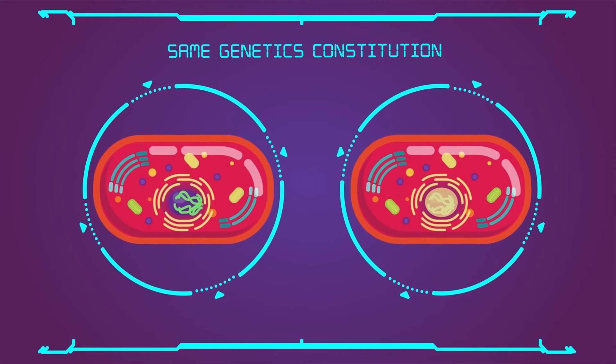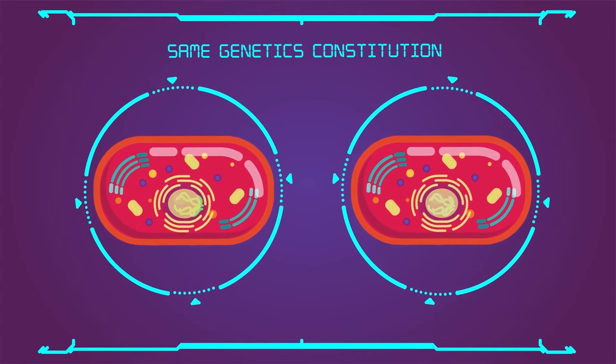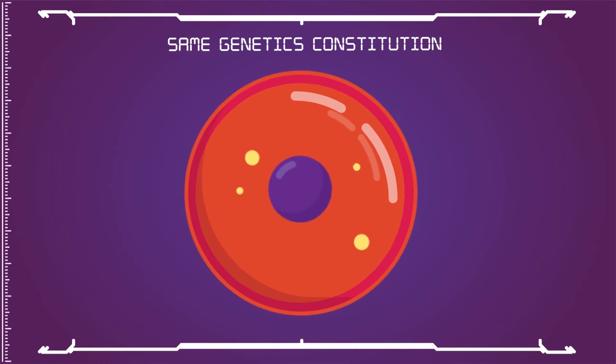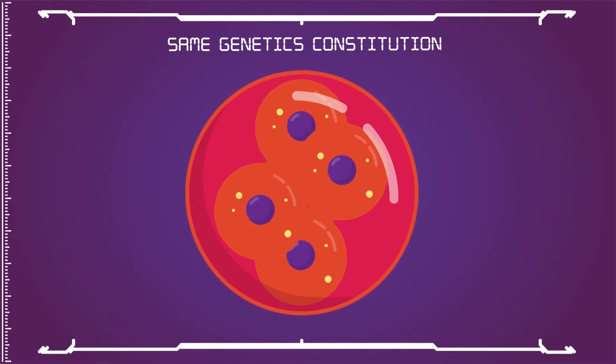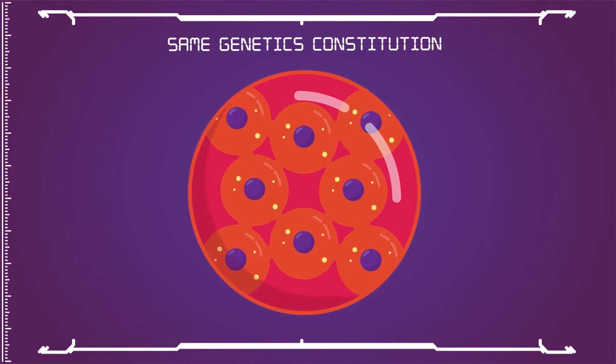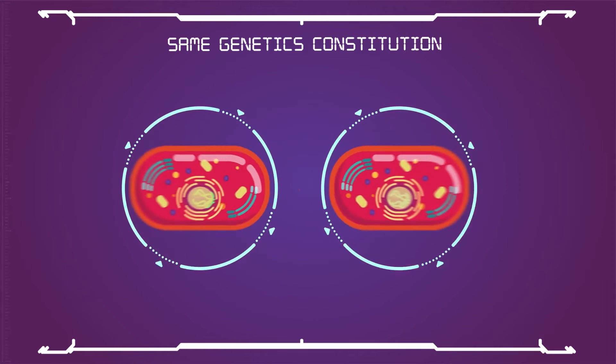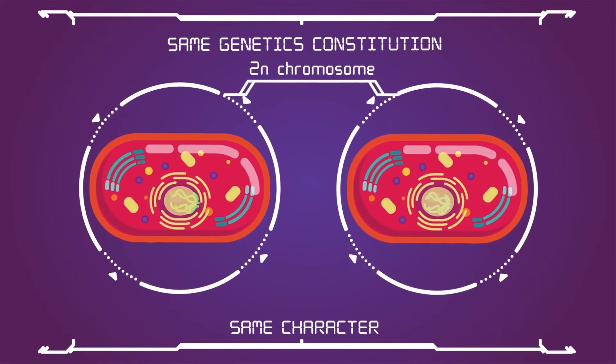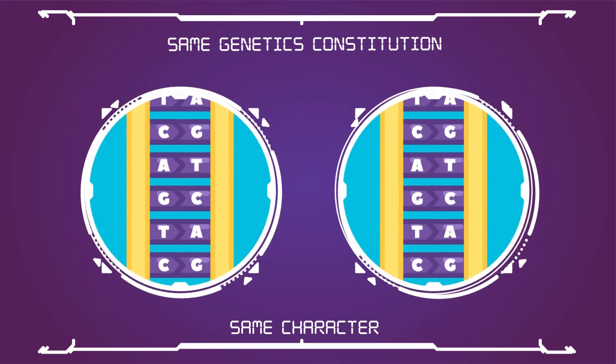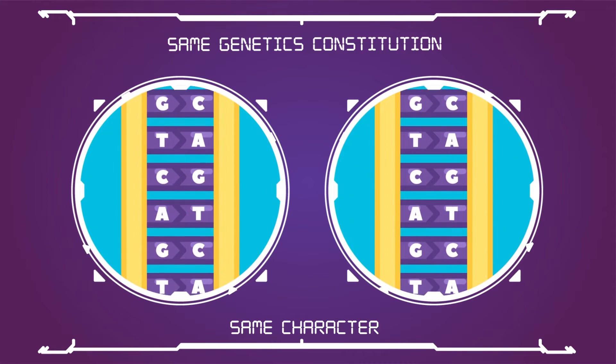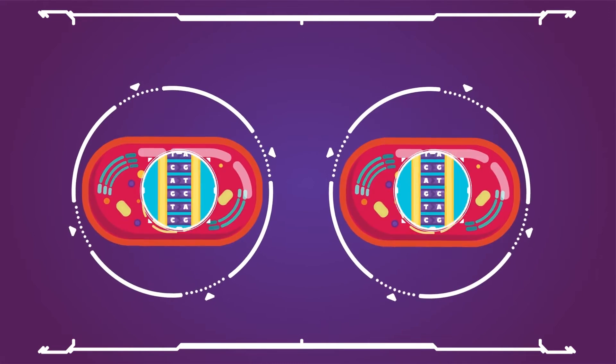It is responsible for growth and development of multicellular organisms from a single cell zygote. The number of chromosomes remains the same in all cells produced by this division, thus the daughter cells retain the same character as those of the parent cell. It helps the cell in maintaining proper size.